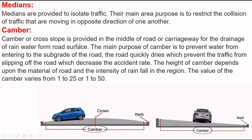The main purpose of the chamber is to prevent water from entering the subgrade of the road. The road quickly drains water, which prevents traffic from sliding off the roads, thereby decreasing the accident rate. The height of the chamber depends on the material of the road and the intensity of rainfall in the region. The value of the chamber varies from 1 in 25 to 1 in 50.